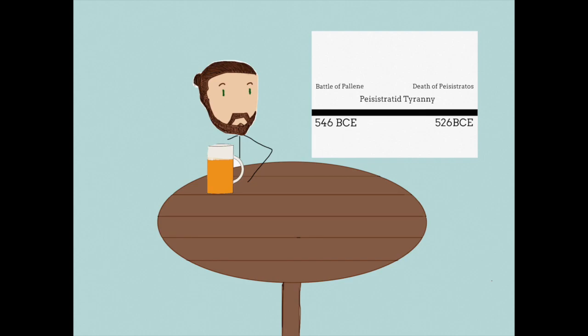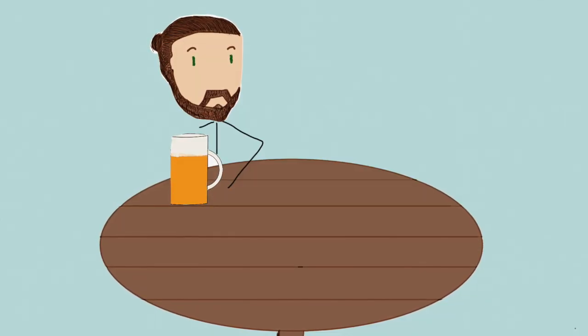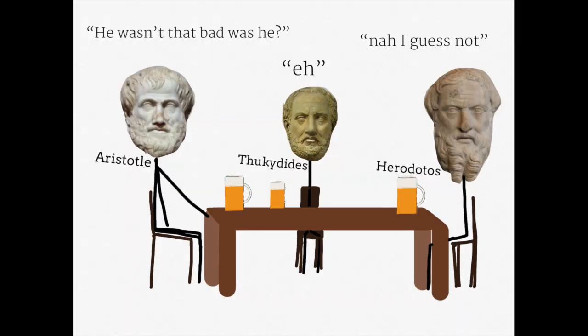He left Athens undoubtedly better than how he found it, and his stable and long rule meant that no matter what, things would never go back to the way they had been before he took power. Athens was now stronger, more centralized, economically stable, and peaceful. For his achievements, Pisistratus is one of the few Greek tyrants to be remembered fondly by his people even centuries after his death.